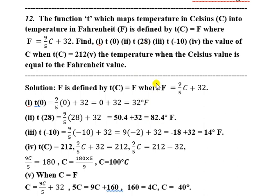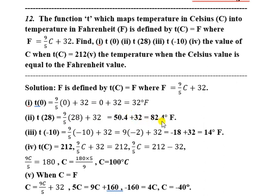Next question: T of 28. F is equal to T of C, which is 9 by 5 into C plus 32, with C equal to 28. So T of 28 equals 9 by 5 into 28 plus 32. Now 9 into 28 equals 252, so 252 by 5 equals 50.4. Then 50.4 plus 32 equals 82.4 degrees Fahrenheit.